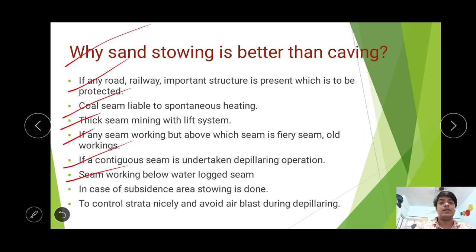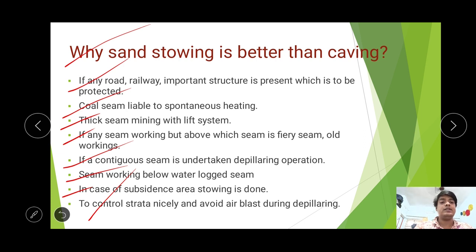To avoid that, sand stowing operations are done into the lower seam to maintain good working conditions. In cases of subsidence, stowing is done to protect further subsidence by giving natural support so the roof does not cave in. Stowing also helps to control strata and avoid air blast during depillaring. In caving, there is a chance of air blast where roof exposure is more, which can cause damage or injury. With sand stowing, strata control is done better and the chances of air blast do not arise.